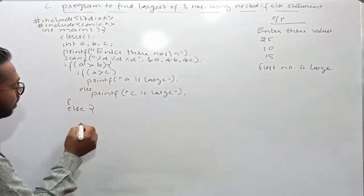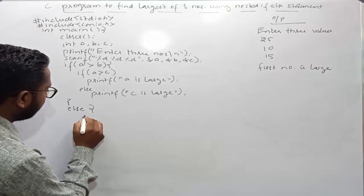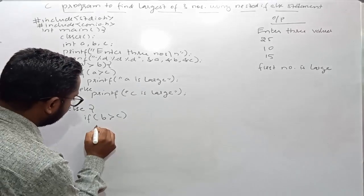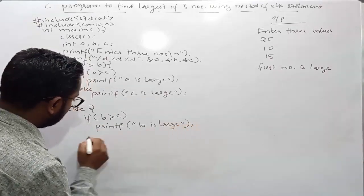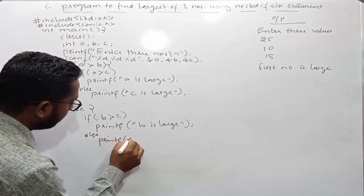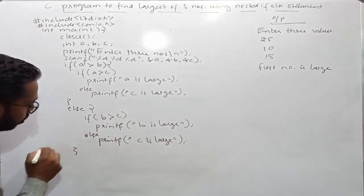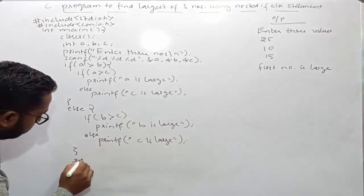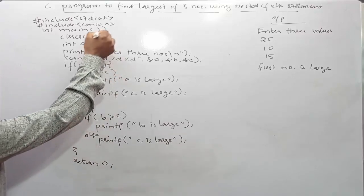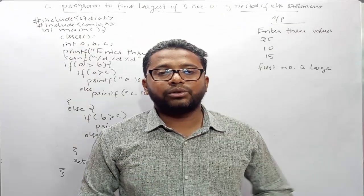Now in the else block I will make one more comparison using if: if b is greater than c, then I will print that b is the largest, otherwise I will print that c is the largest. Then I close that curly bracket, write return 0, and close the main function. That's all for this program.